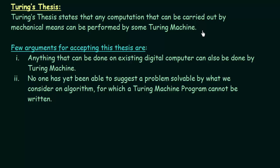We have discussed other machines in this lecture series, like finite state machines and pushdown automatas, and we saw how limited they are. But seeing Turing's thesis, you can understand how much more powerful a Turing machine is. There are a few arguments for accepting this thesis. Number 1: anything that can be done on existing digital computers can also be done by a Turing machine.